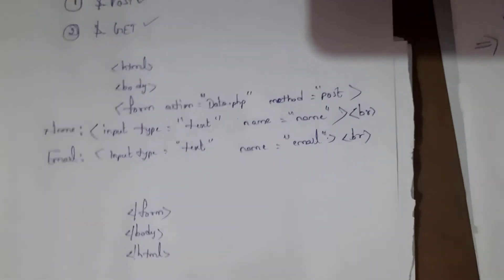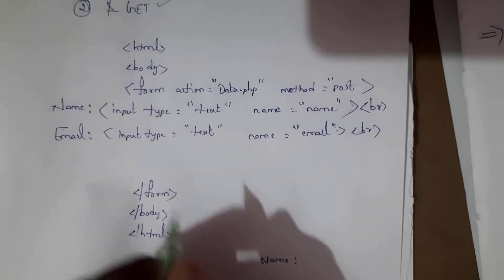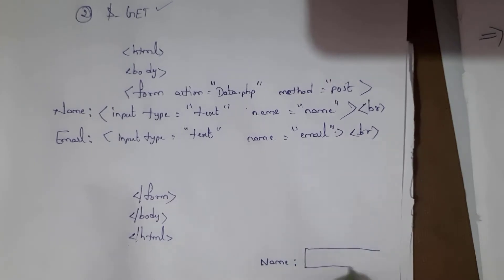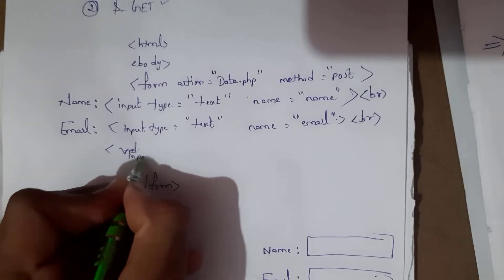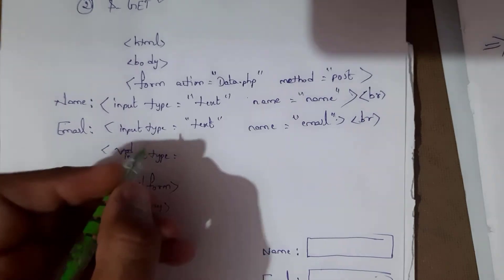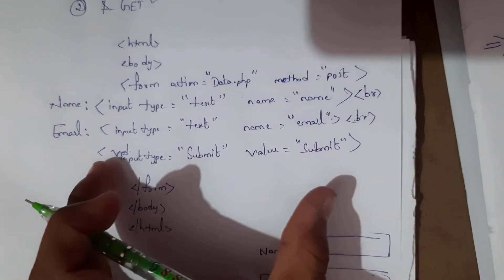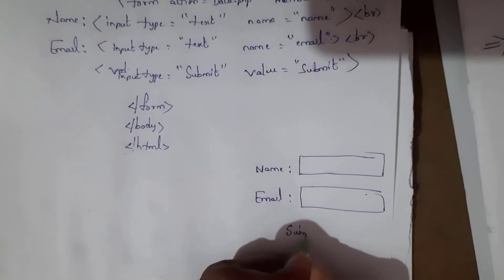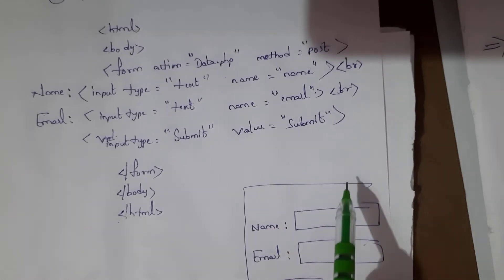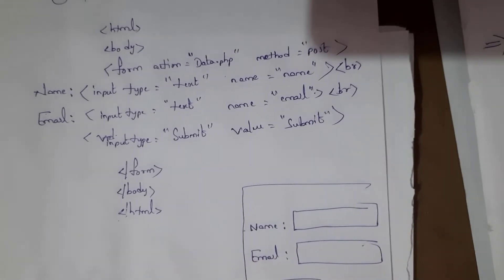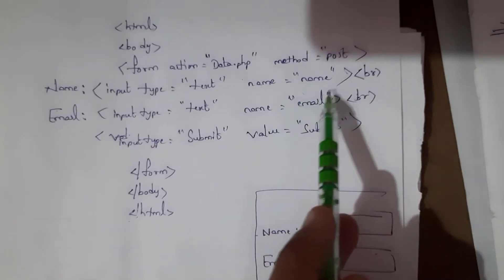By entering these two tags, the output is going to look like this — text boxes are created for name and email. Then input type is submit and value is submit. By using this tag, a submit button is created. So this form contains a name field, an email address field, and a submit button.